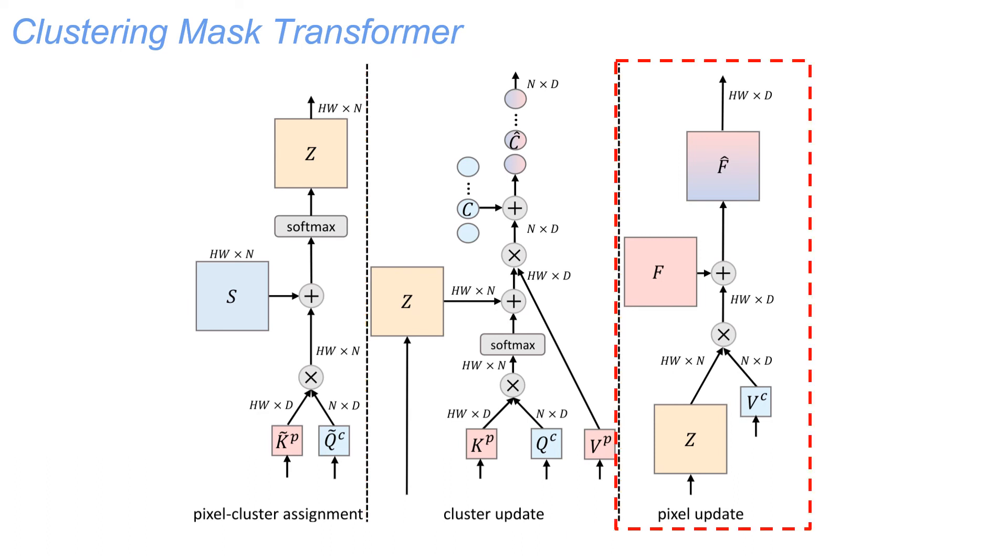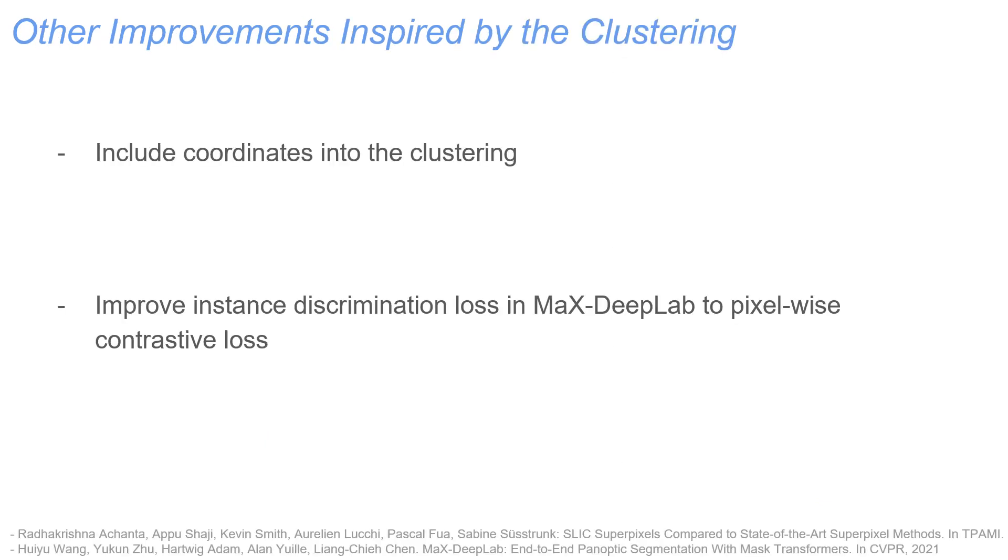Additionally, we perform a bi-directional update, where the pixels will also be updated based on the assignment. The clustering view also inspires some other improvements, such as including coordinates and a pixel-level contrastive loss.